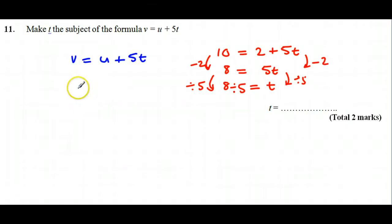So first, instead of taking away 2, we're going to take away U. V and U are different variables, so all I can do is write it as V minus U. I've taken away the U on the right hand side, which leaves me with 5T.